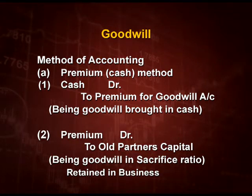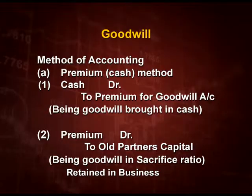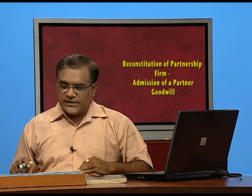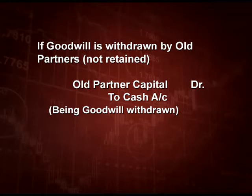Next entry: this premium is distributed to the old partners. Premium Account debit to old partners' Capital Account, and this is given in sacrificing ratio. Whosoever sacrifices more will get more. This entry is done if the goodwill is retained in the business, that is the old partners are not withdrawing it. If goodwill is withdrawn by the old partners, then one more entry is done: Old Partners' Capital debit to Cash Account.